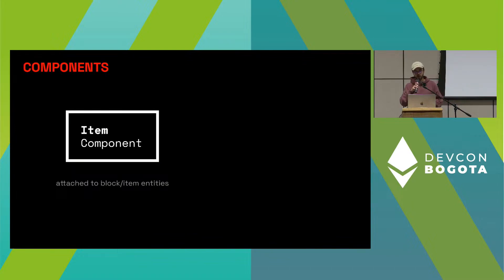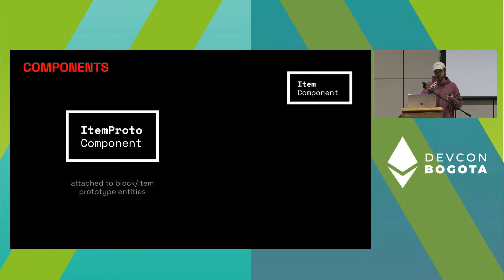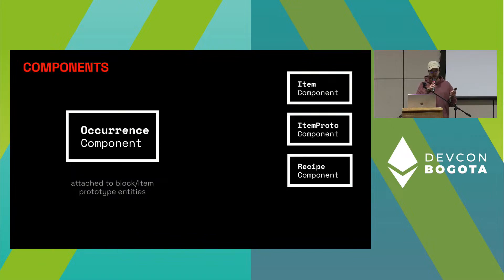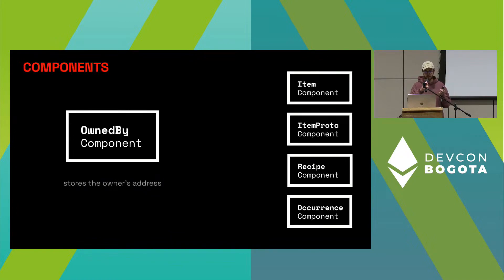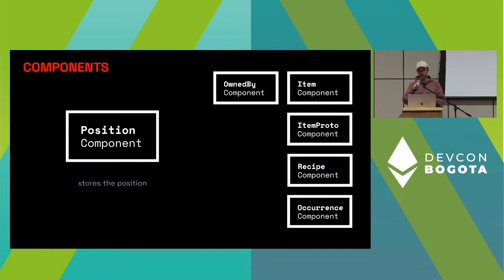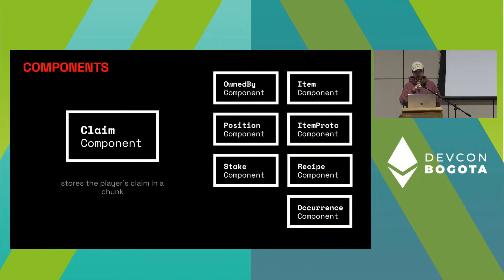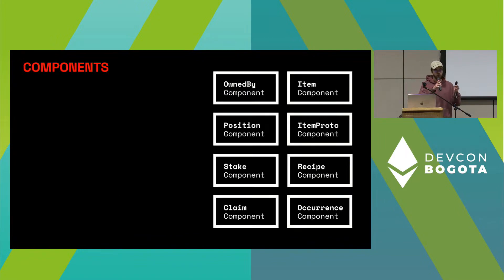I'm going to go quickly over the components and then explain them further when I explain the systems. We have the item component, which is attached to item entities and basically tells you which type of block that entity is. Then we have the item prototype component, the recipe component, and the occurrence component, which are both attached to the item prototype entity. We have the owned by component, which tells you who owns a specific block, the position component, which stores the position of a block. And then two more: the stake component and the claim component, which are used for our chunk protection system.